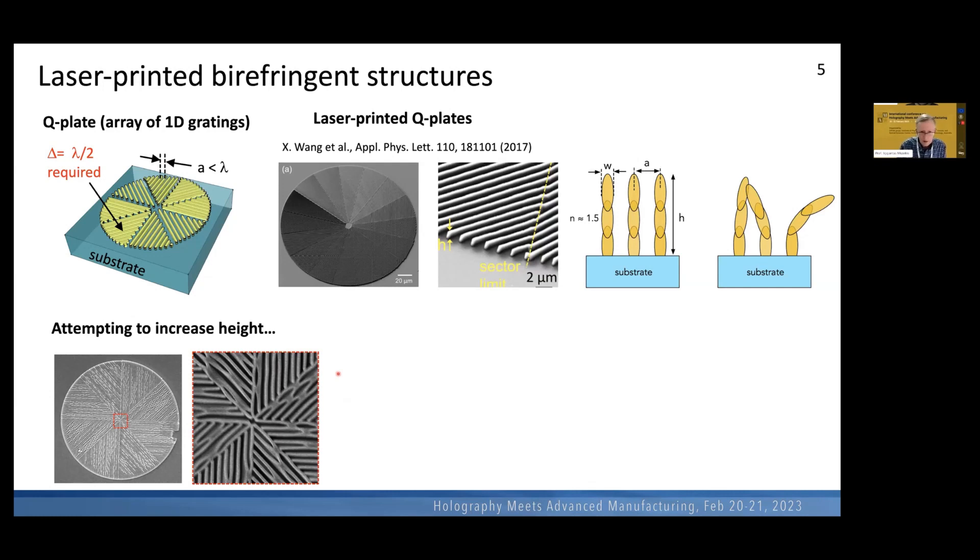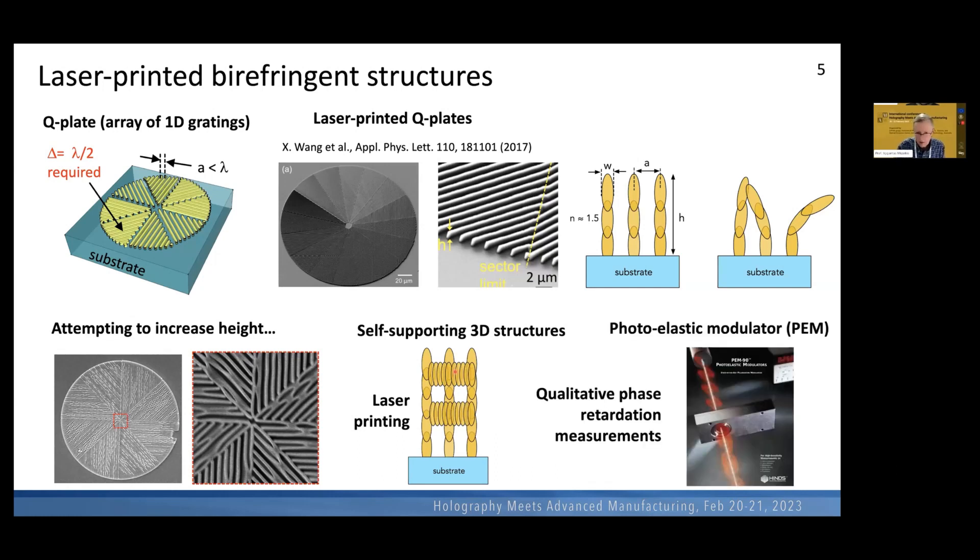So how to do it? Our idea is very simple. We simply construct three-dimensional structure, and three-dimensional structures, photonic crystals, they are self-supporting and they can be printed to have very large height. And we deliberately introduce structural anisotropy as big as possible to create strong optical birefringence. And another important component for us was to be able to determine, to measure the birefringence, and we used this device called photoelastic modulator. We found some discarded device, and it enabled us to investigate our photonic crystals in more details, measure their retardance precisely.